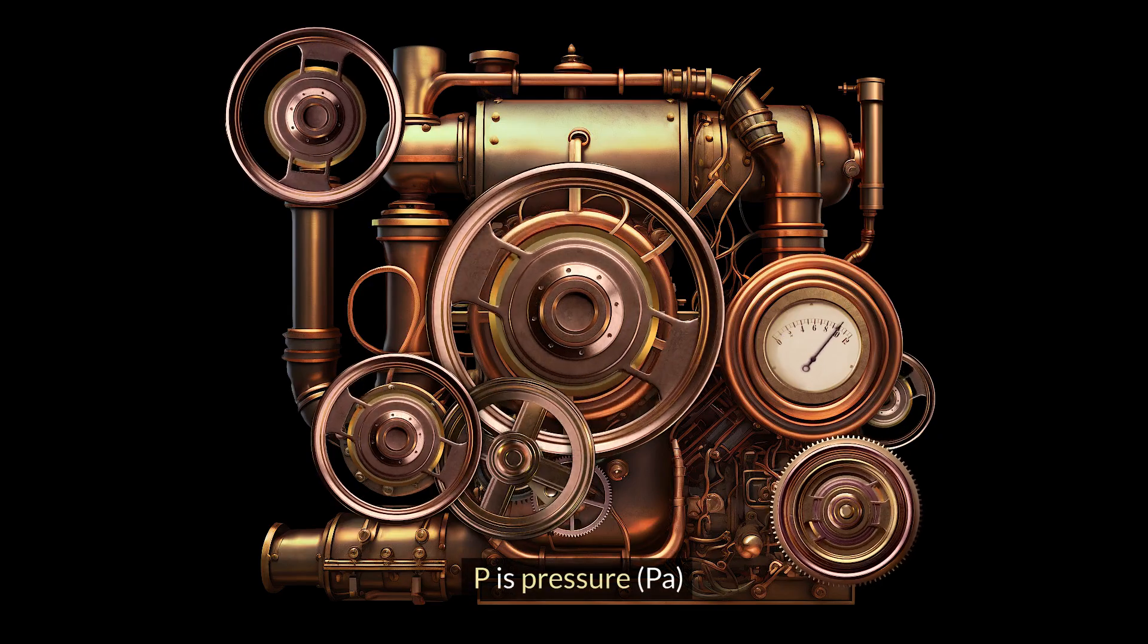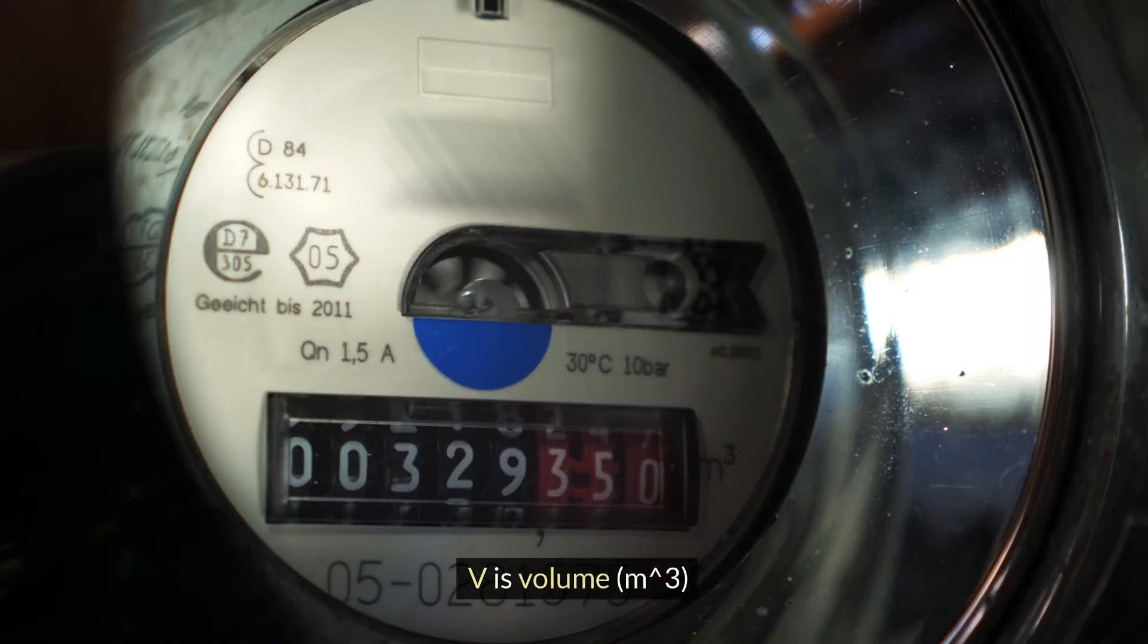Where H is enthalpy in joules, U is internal energy in joules, P is pressure in pascals, and V is volume in cubic meters.